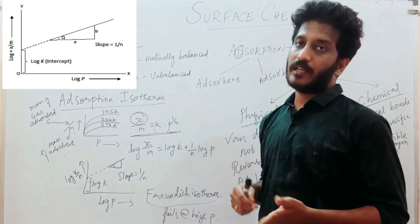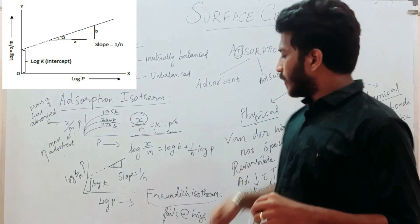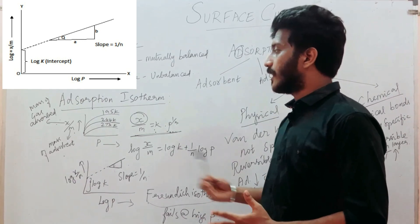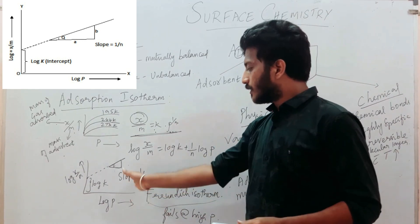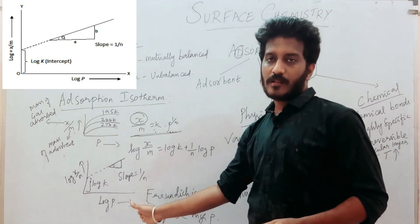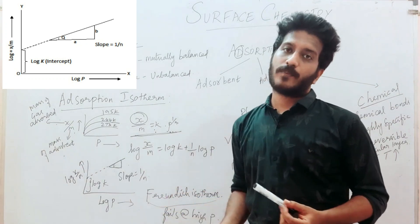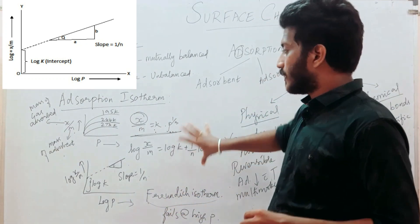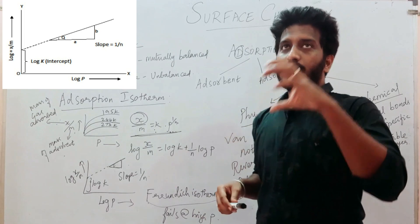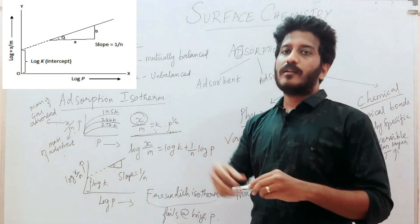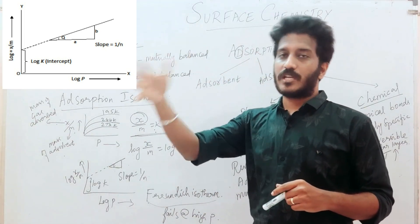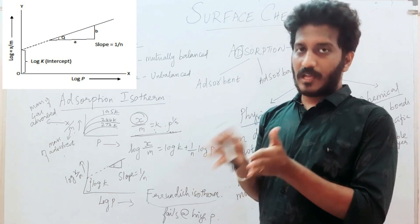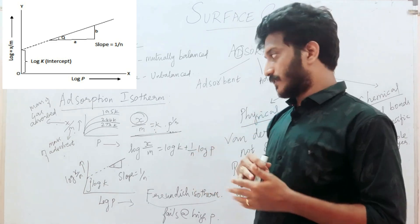Adsorption has a limitation — the Freundlich isotherm fails at higher pressure. That is why we explain it only up to a certain pressure range. This is the limitation of the Freundlich isotherm. It is not perfectly accurate under all conditions.